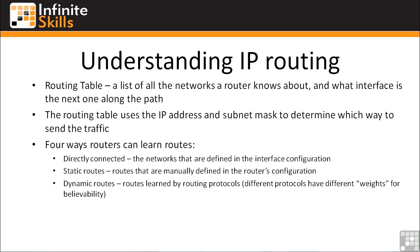The next method is dynamic routes — these are routes learned by routing protocols. Different routing protocols have different weights for their believability. If you carry on with your CCNA through ICND2 and the CCNP course, you'll see that you can learn the same routes through different routing protocols, and the router will choose to believe, for example, OSPF more than RIP. If the same network is being learned via both RIP and OSPF on two different interfaces, the route learned via OSPF will be the one that ends up in the routing table.